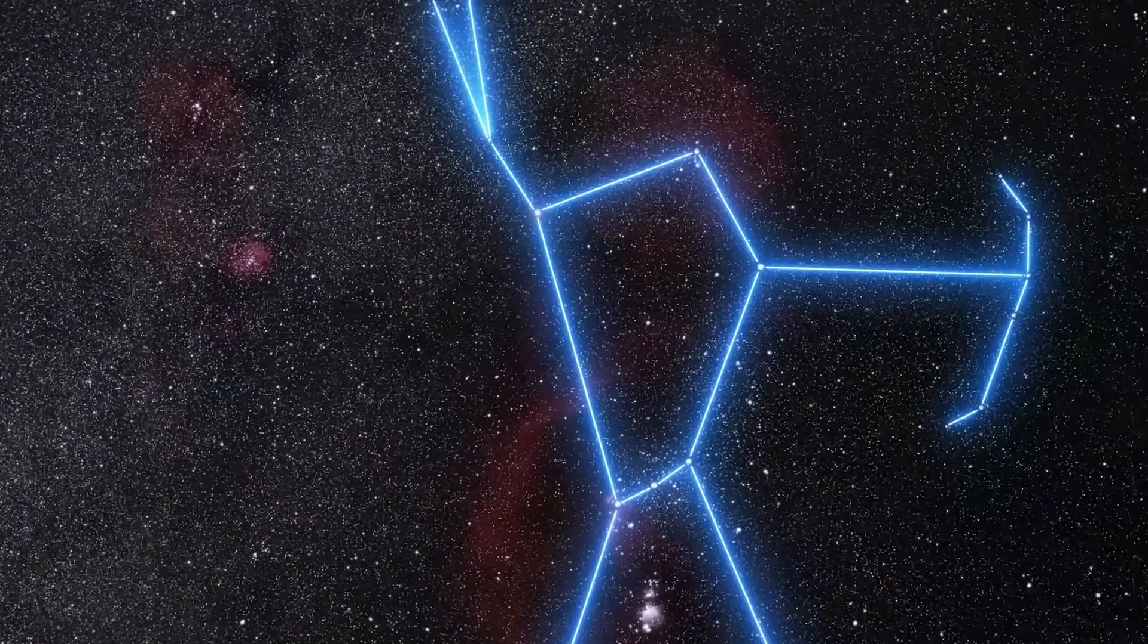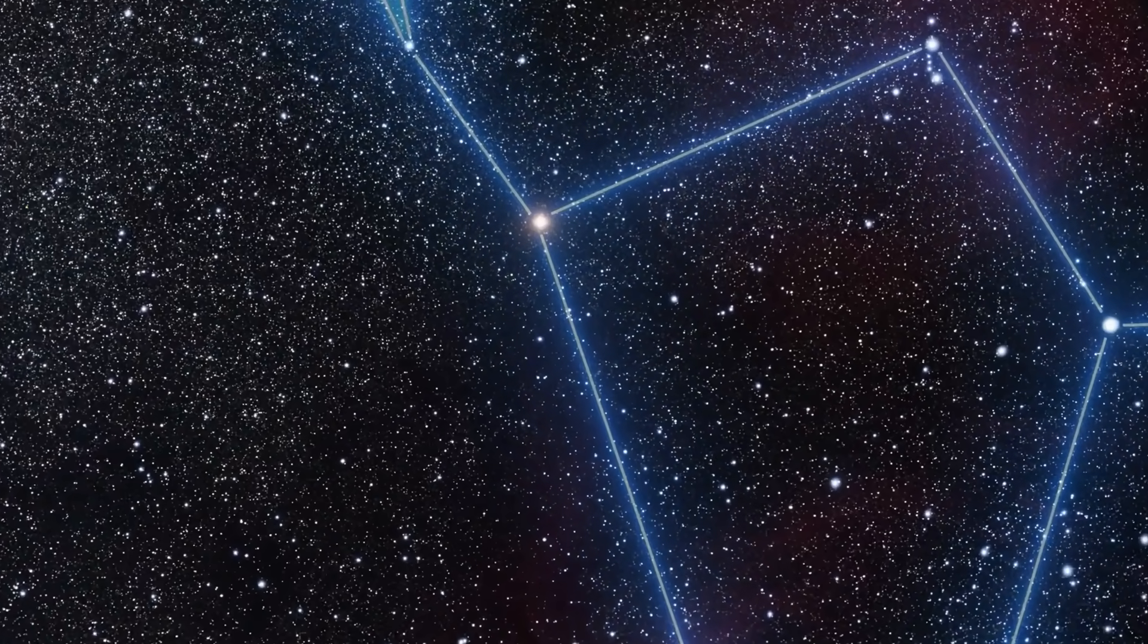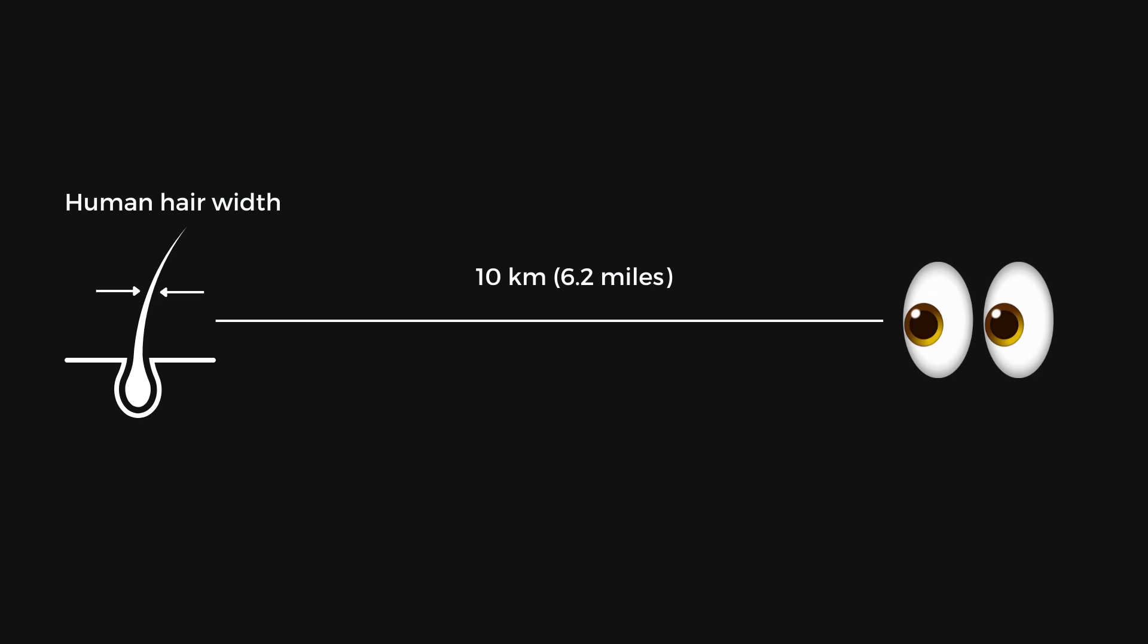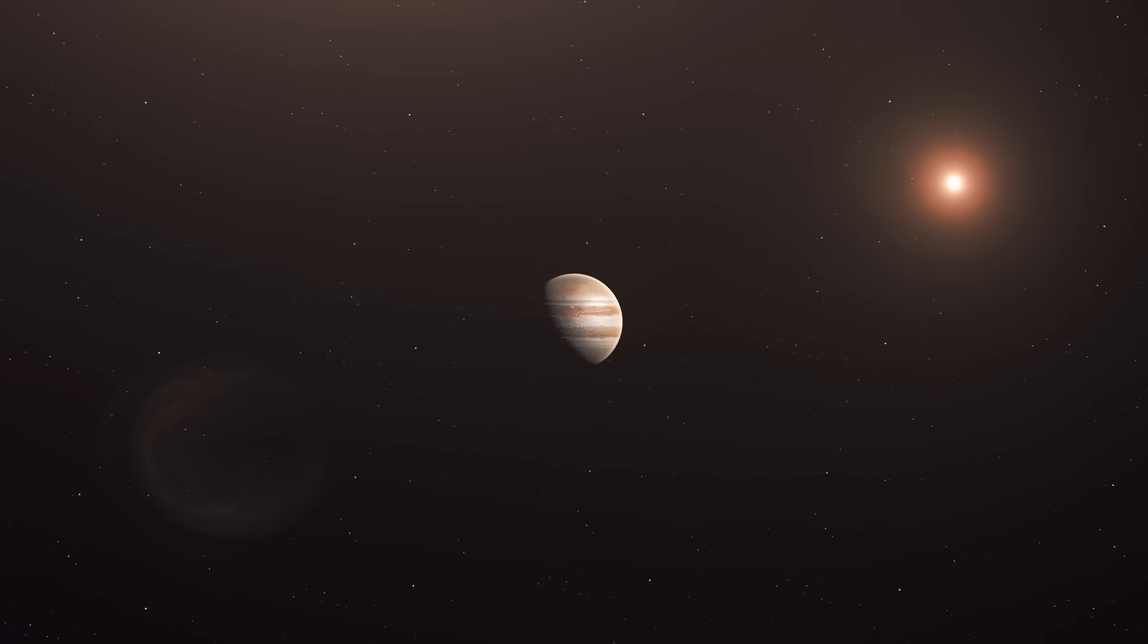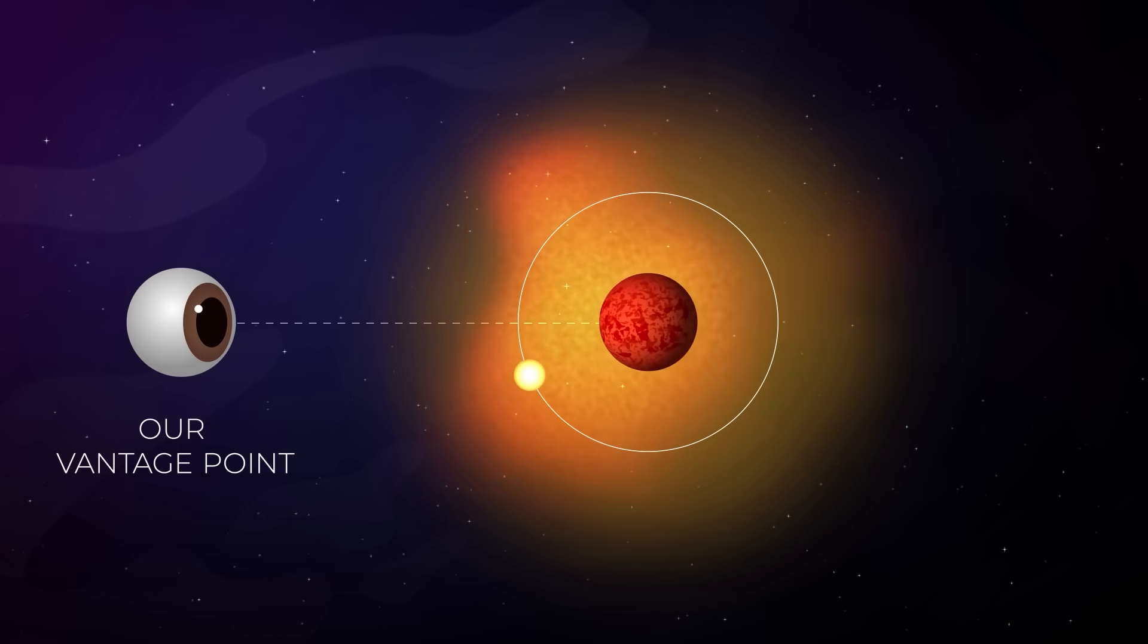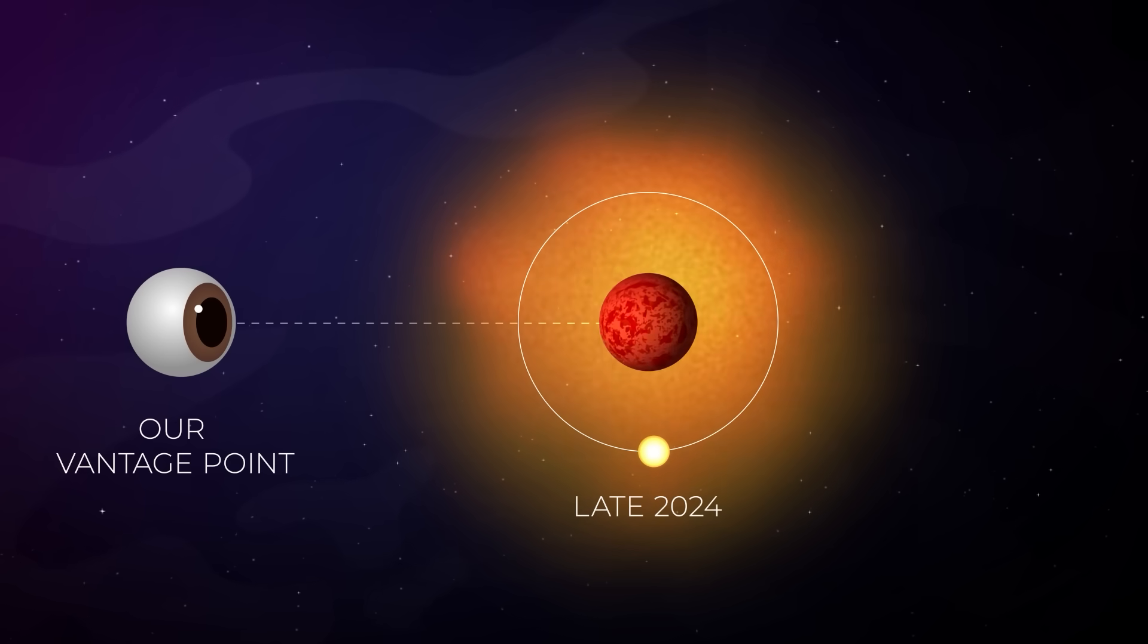When the Gemini team observed Betelgeuse in December 2024, they saw something remarkable. Just 0.05 arc seconds from the center of Betelgeuse's disk, a distance equivalent to the apparent width of a human hair from 10 kilometers, or 6.2 miles away, a tiny, faint point of light appeared. This separation translates to about four astronomical units, or roughly the distance between the Sun and Jupiter. The object was about six magnitudes dimmer than Betelgeuse, so faint that it had remained completely invisible in earlier images, including those taken in 2020. But in December 2024, it finally appeared, and not just anywhere. It showed up exactly where astronomers had predicted the companion would be, based on orbital models.